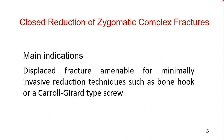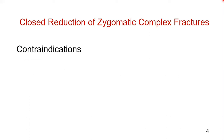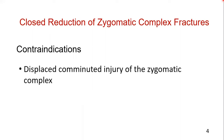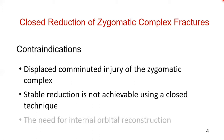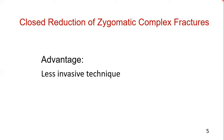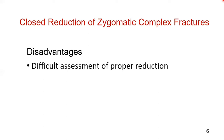The main indications are when a displaced fracture is reduced with simple techniques like a bone hook or Carol Gerard type screw. Contraindications are when there is a comminuted fracture of the zygomatic complex that is also displaced, and stable reduction is not achievable — meaning the zygomatic complex fracture is unstable.